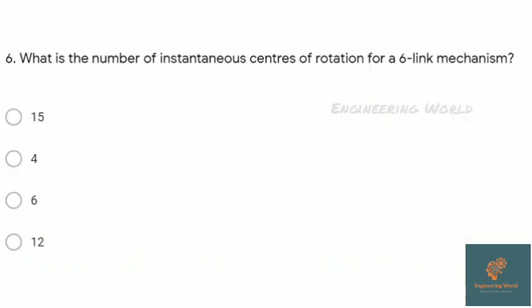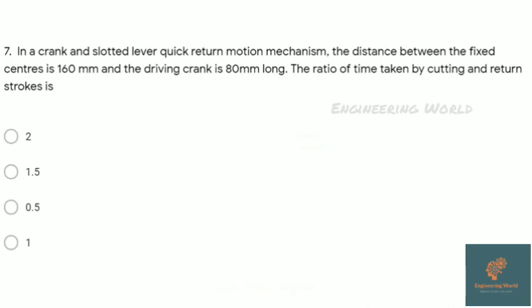What is the number of instantaneous centers of rotation for a six-link mechanism? Here is the formula: N = n(n-1)/2, where small n is the number of links. Given that n=6, by putting values we get the answer as 15.